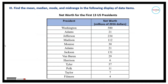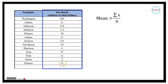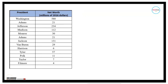Next, let us consider the table showing the net worth for the first 13 US presidents, and find the mean, median, mode, and mid-range. To compute the mean, we sum up the net worth column expressed in millions of dollars and divide by the total number of presidents. The mean equals the summation of x divided by n. The sum is 1,243, so 1,243 divided by 13 equals 95.6 million dollars.